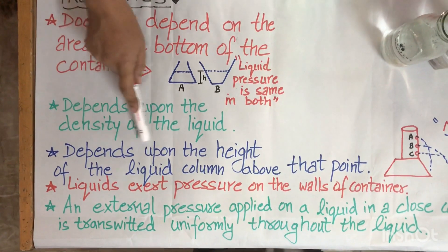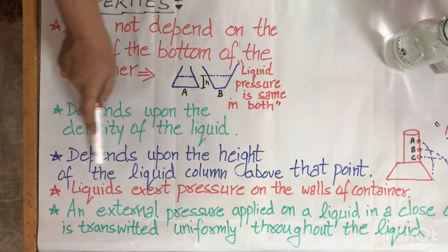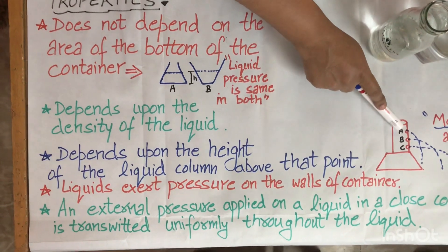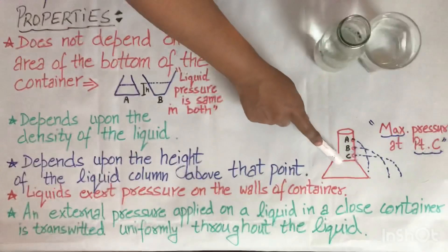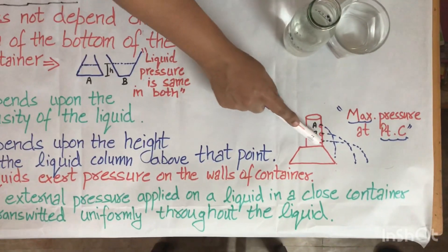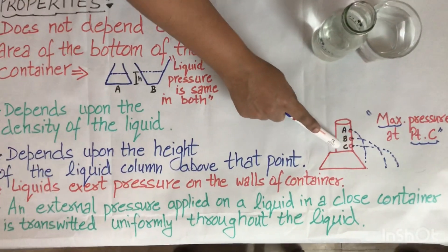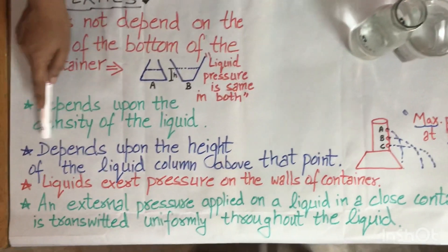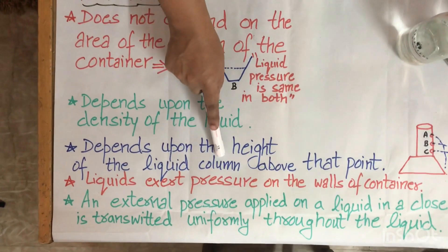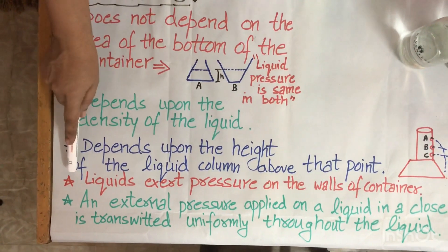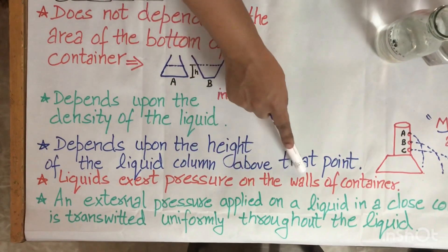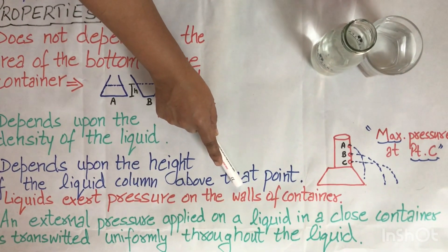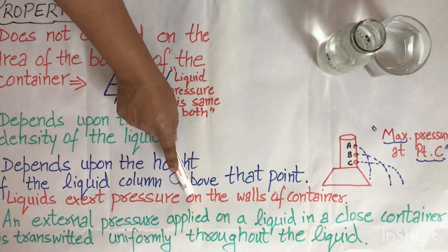The next property is that liquid pressure depends upon the height of the liquid column above that point. Considering the diagram with three holes A, B, and C, the liquid pressure will be maximum at point C because the height of the liquid above C is much greater compared to point A. Liquids also exert pressure on the walls of the container — that is why a water-filled balloon is spherical in shape.